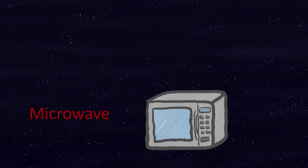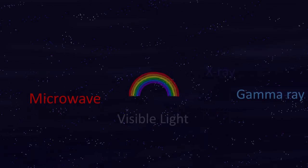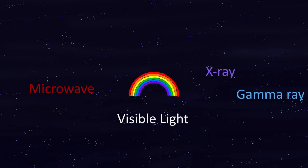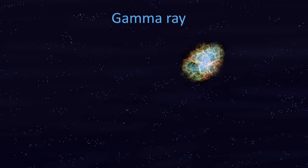Microwaves are used to cook food in microwave ovens. I also look at another color of light which we call gamma rays. Some objects in the night sky give out this color of light, and we want to learn more about these things by looking at the gamma rays they give out.